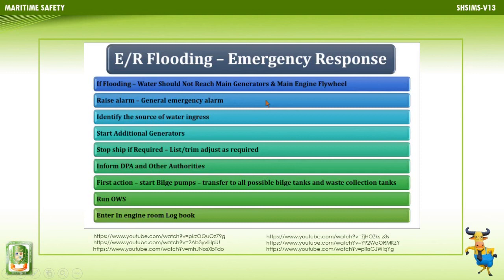If you see the engine room is getting flooded, the first action is to activate the general emergency alarm. If you cannot find the general emergency alarm in the bottom platform, raise the fire alarm, or use the public address system to announce it, or pick up the phone and inform the bridge so they can make an announcement.